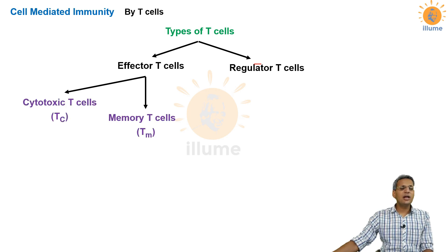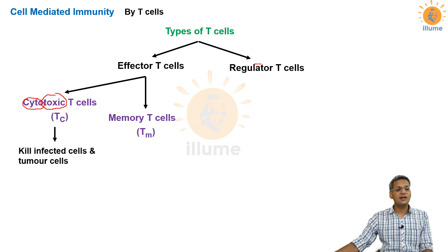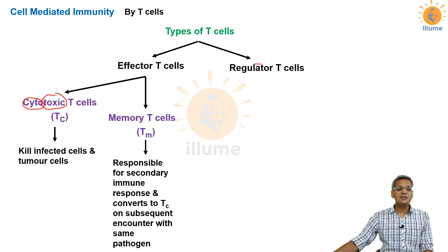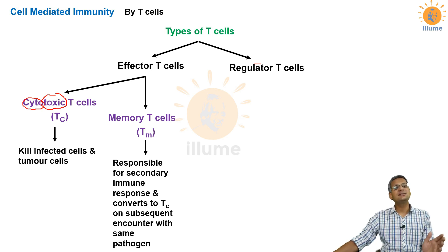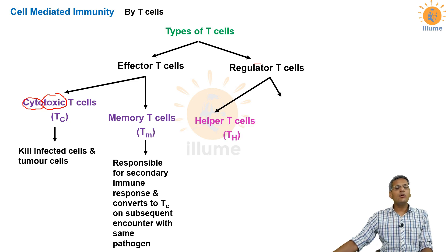Effector T cells are of two types: cytotoxic T cells and memory T cells. 'Cyto' means cells and 'toxic' means lethal — cytotoxic T cells kill infected cells and tumor cells. Memory T cells are responsible for the secondary immune response. Whenever the body encounters the same antigen a second or third time, memory T cells transform into cytotoxic T cells and produce a rapid response.